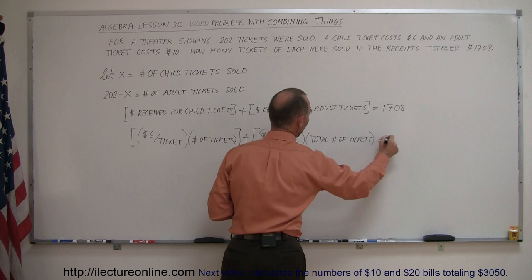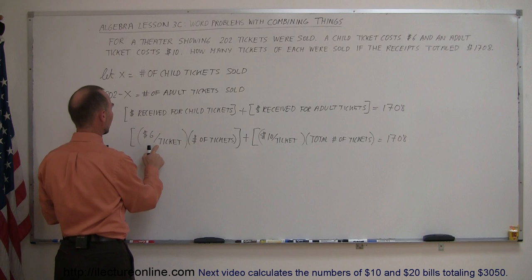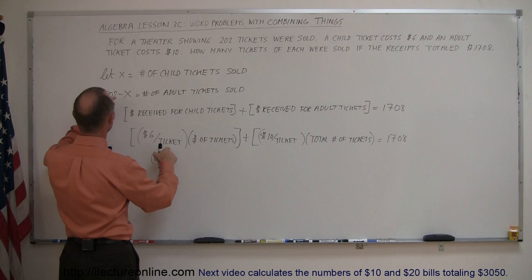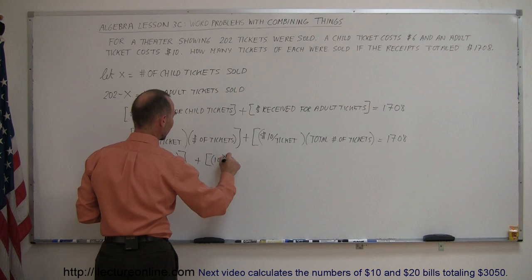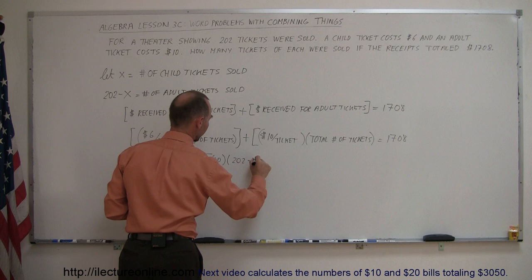That should add up to $1,708. Let's write in what those are. $6 per ticket times the number of tickets, and these are children's tickets, the number of tickets is X. That's the total value of all the children's tickets, plus the dollar per ticket, that's $10, multiply that times the number of tickets, which was 202 minus X for the adults. And that adds up to $1,708.